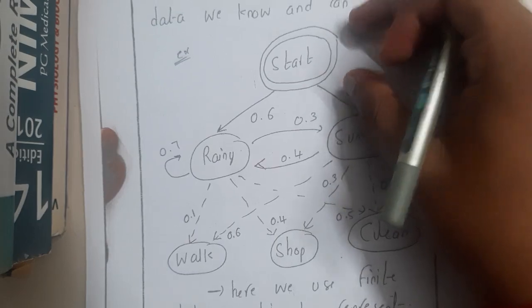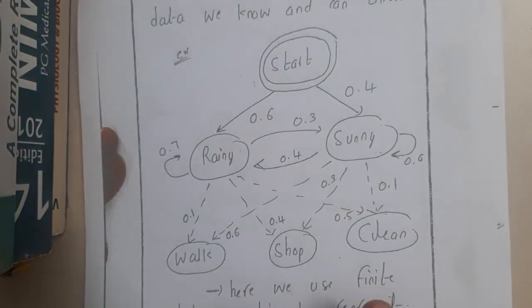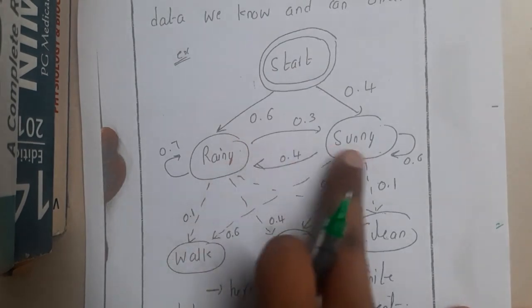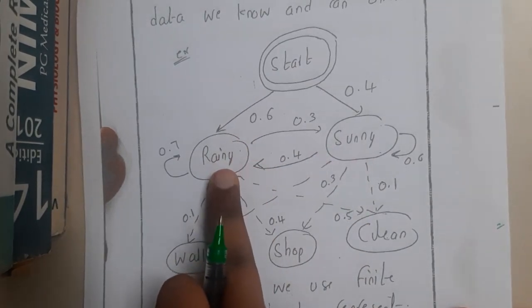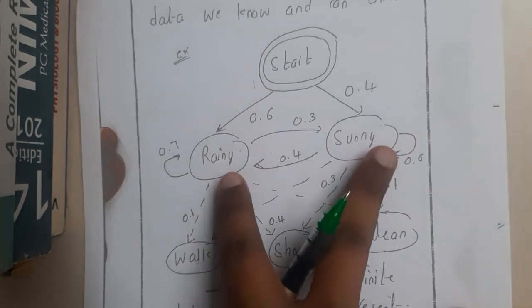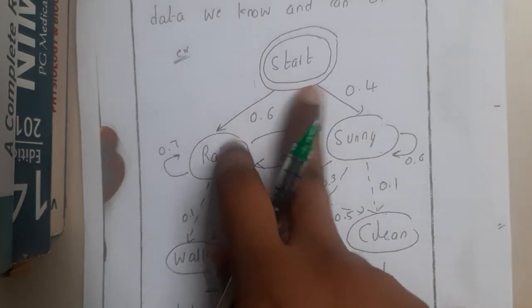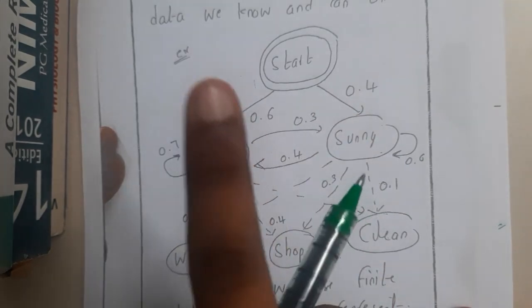You are starting from here. This is a probability graph you can say. From start you are having two options: it might be rainy or it might be sunny, the outside situation. Here we are having probability 0.6 and here we are having probability 0.4.